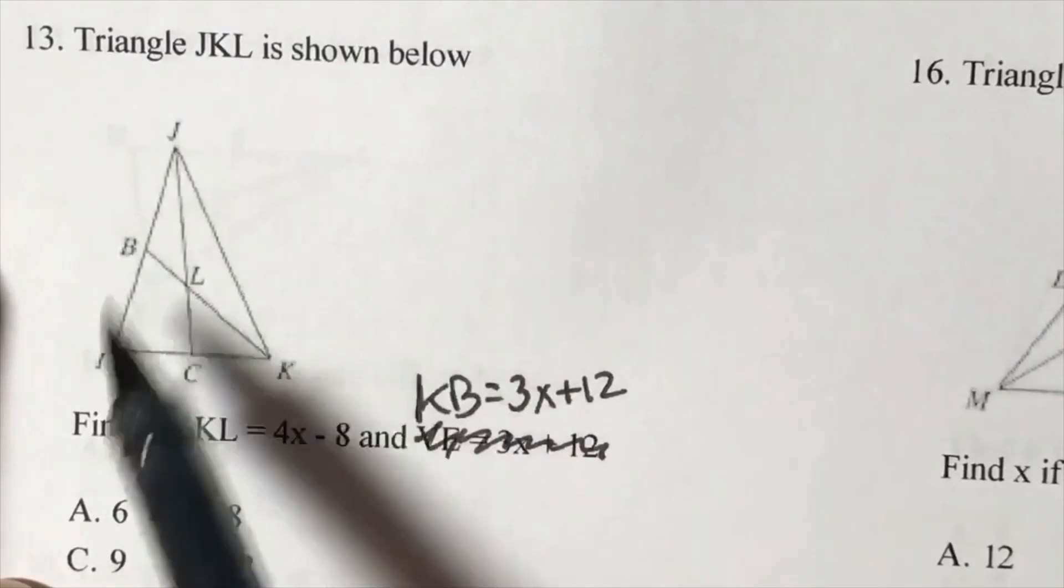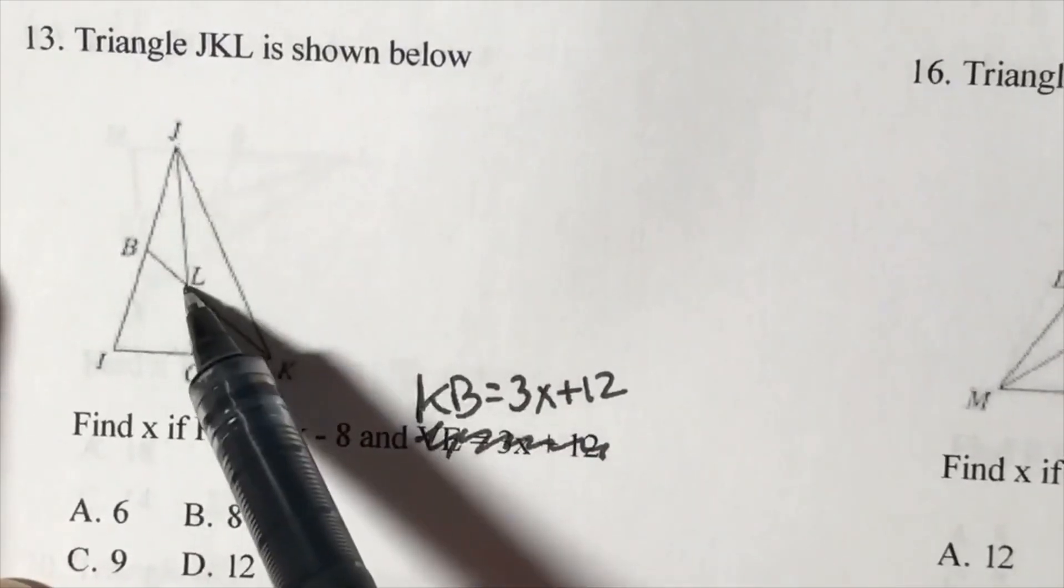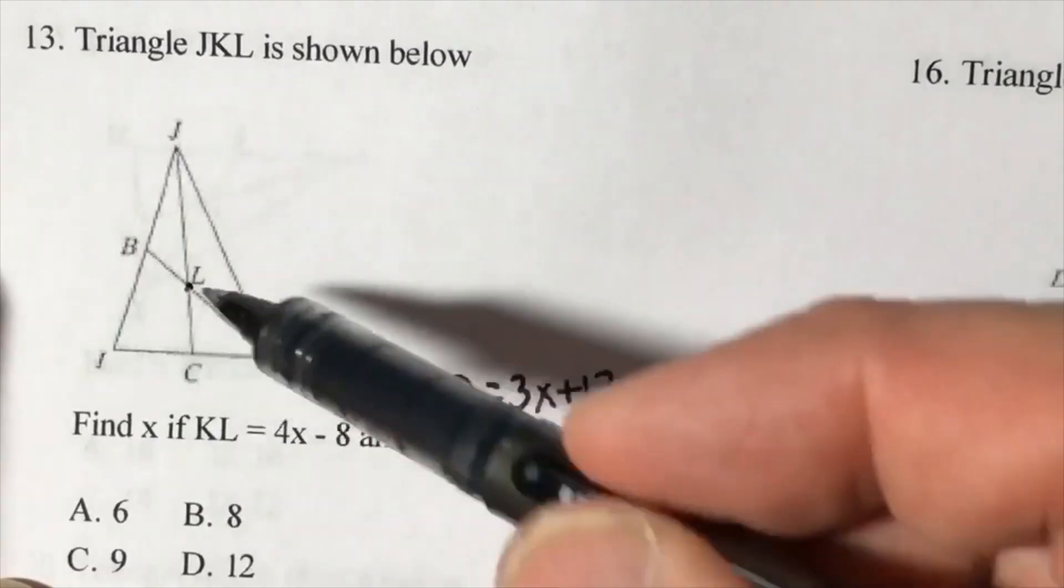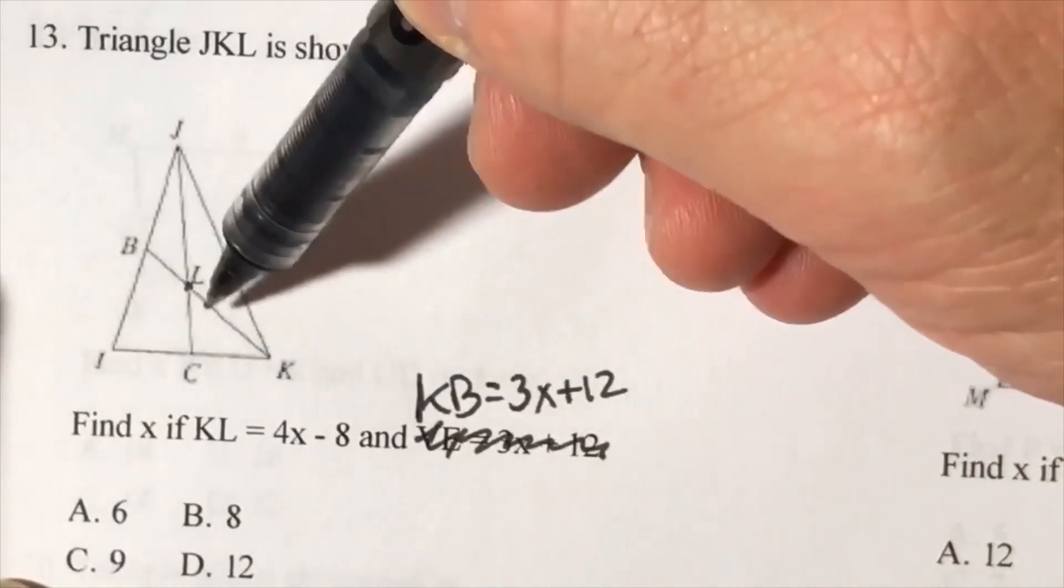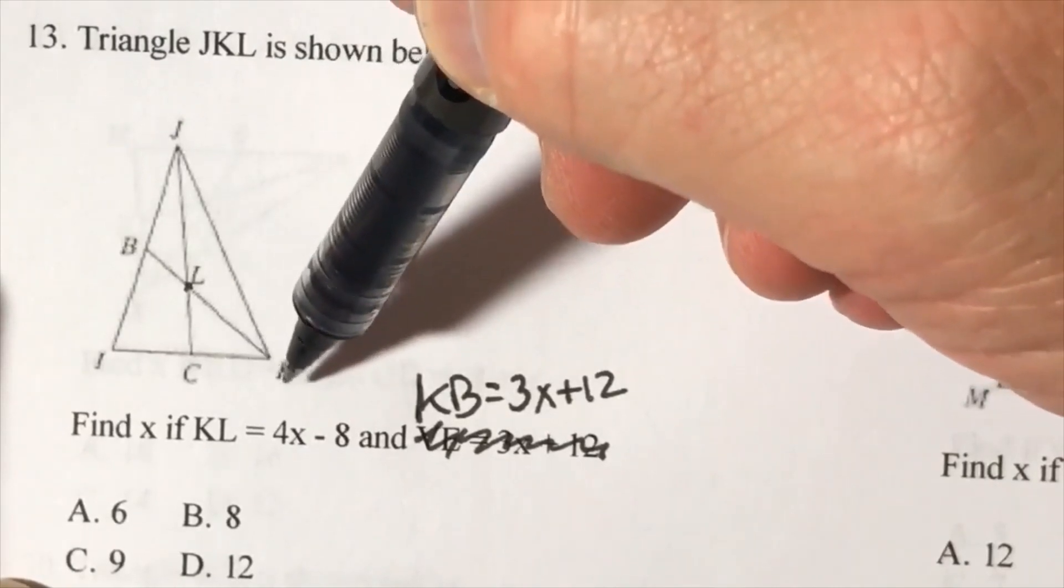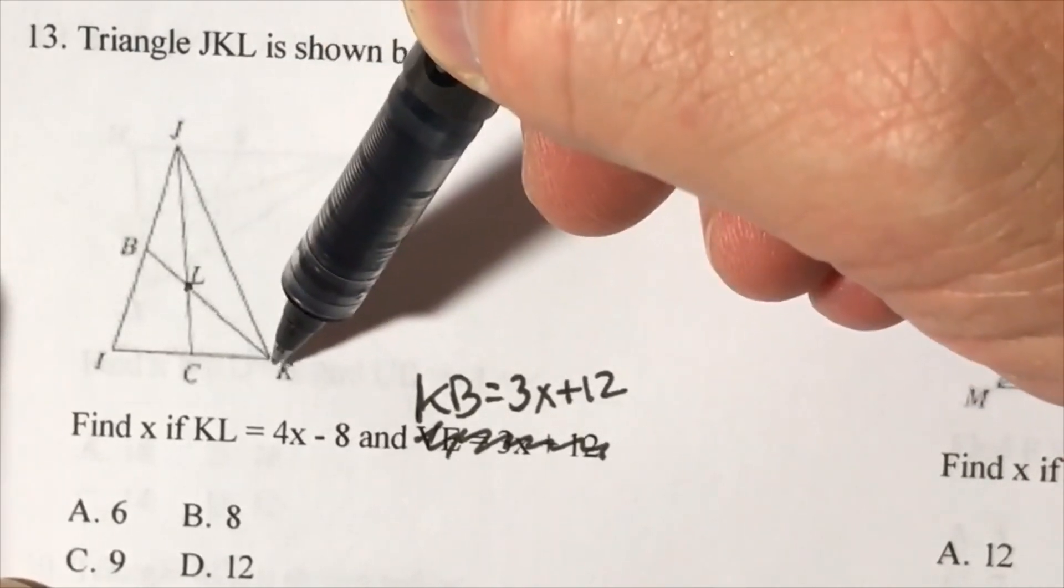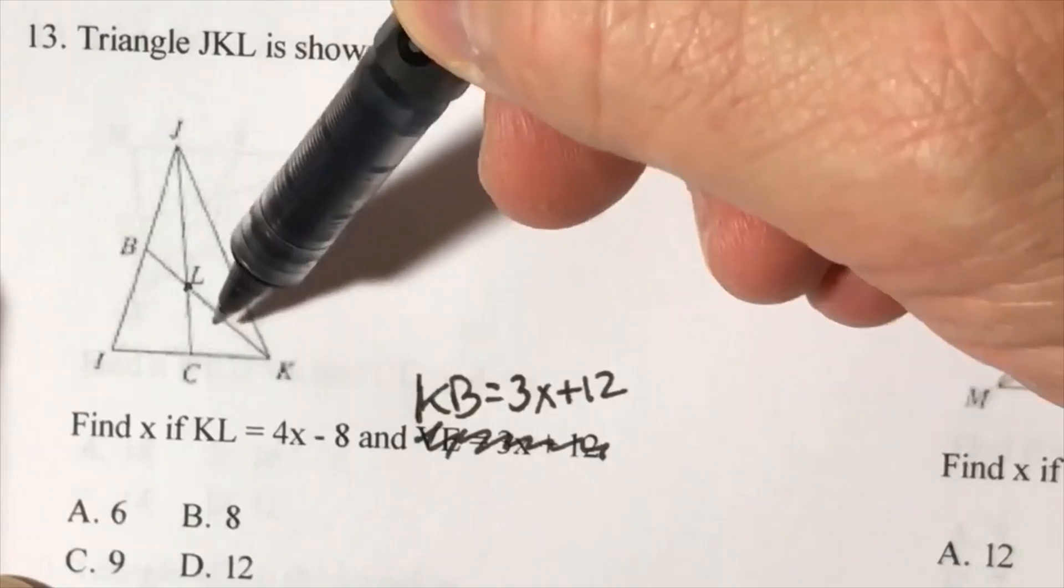In triangle JKL, the medians are intersecting. There's the small part and the large part. We are given KL, which is the large part.